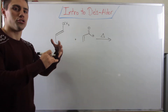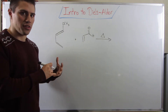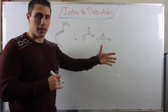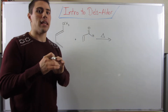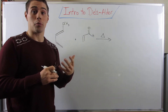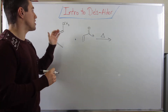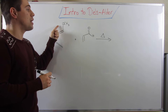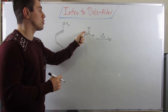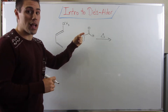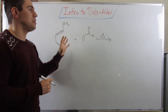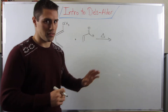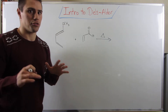To connect what we just did in the last video with where we're headed, being able to draw resonance based on the electron-donating groups and electron-withdrawing groups you have is going to be imperative to how to predict the product and deal with other reactions.